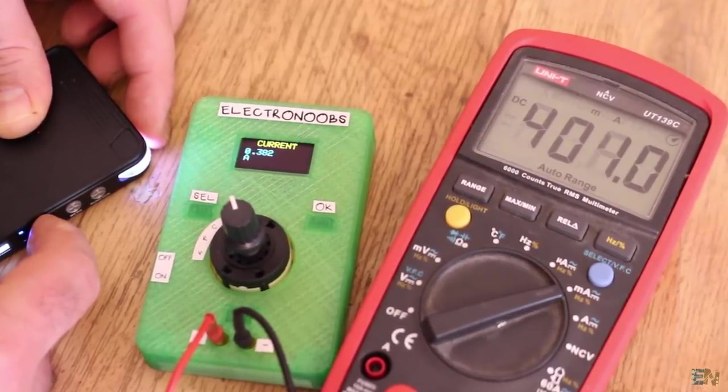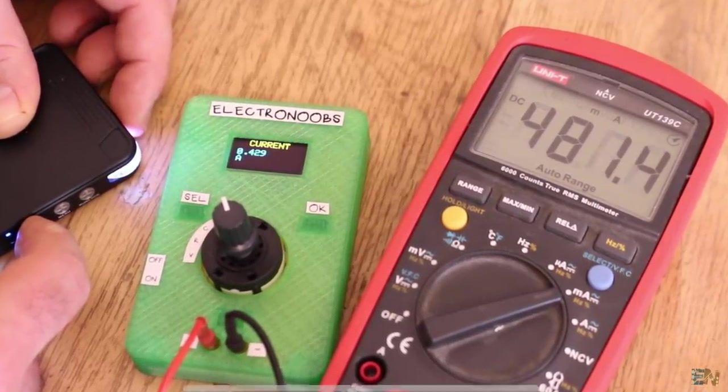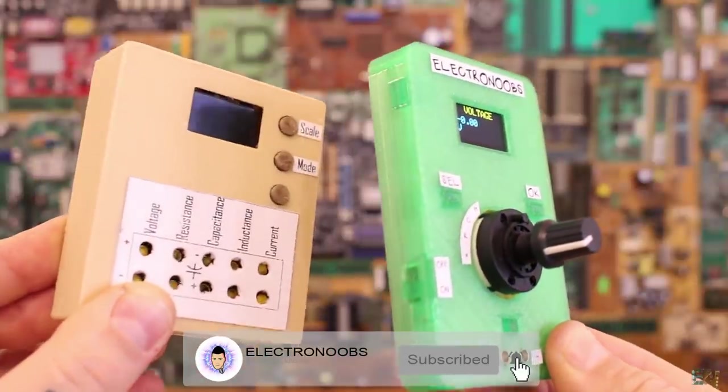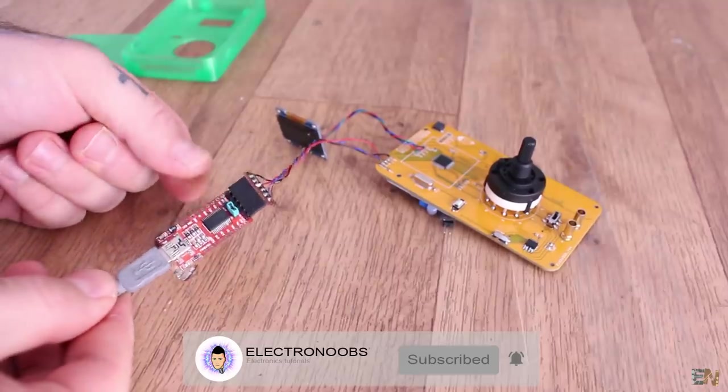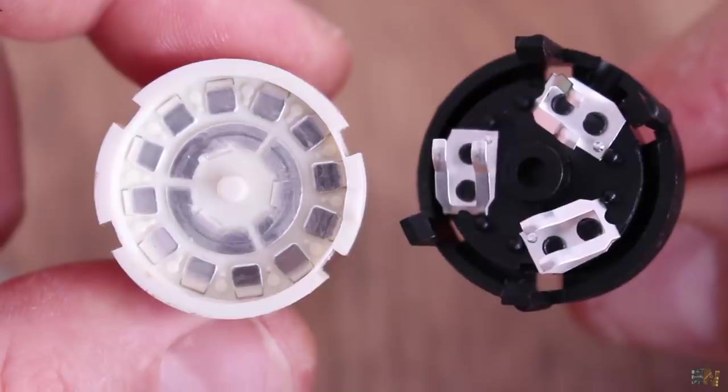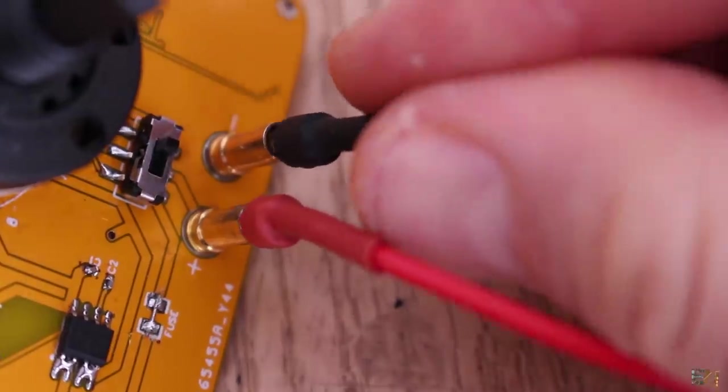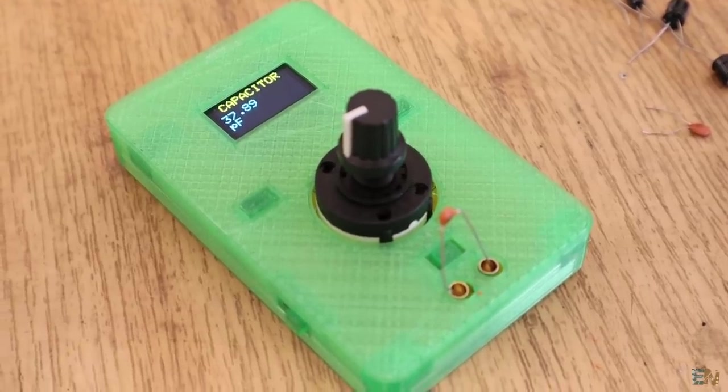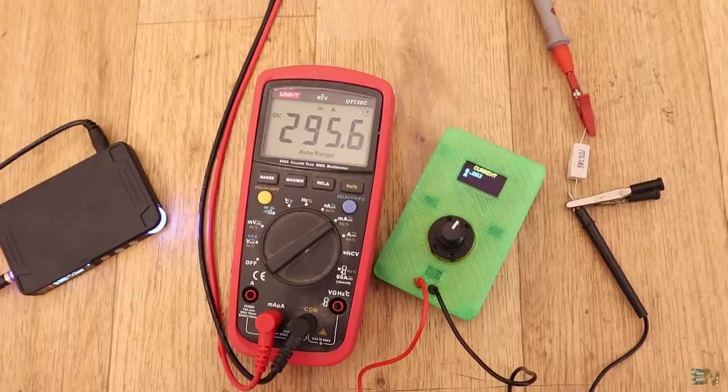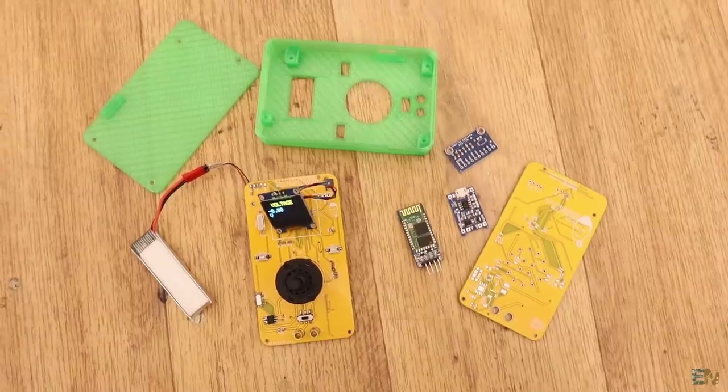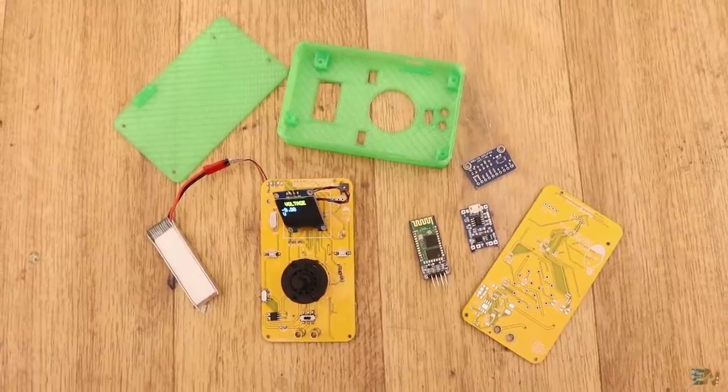So guys, I think that with the schematic, with the code and with all the previous separated videos, you will be able to create the same multimeter and also understand how it works. See all the links below and read the tutorial on electronoobs.com for more. If you have any questions, leave a comment below or even better, use the new forum on electronoobs.io. I hope that you liked this tutorial and if so, give a like to this video. Also consider subscribing and activating the notification bell. Consider supporting my work on Patreon. Thanks again and see you later guys.